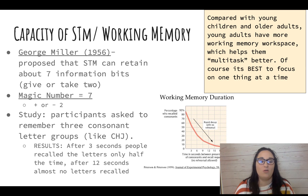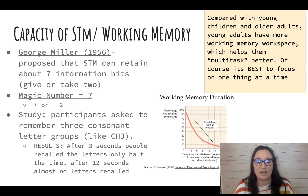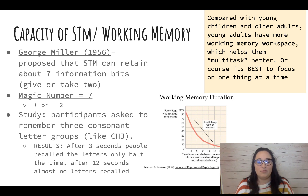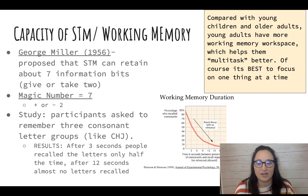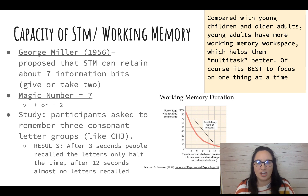There was an important study you need to know conducted by George Miller. He found that our short-term memory can retain about seven pieces of information, plus or minus two. So our magic number for memory is seven plus or minus two. In his study, he asked people to remember three-consonant letter groups, like CHJ. He found that after three seconds, people recalled the letters only half the time. After 12 seconds, almost no letters were recalled. Immediate recall is good, but the drop-off is really fast — and that's with no rehearsal, not repeating it over and over.